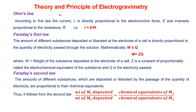Electrogravimetry is governed by three principles: Ohm's law, Faraday's first law, and Faraday's second law of electrolysis. Ohm's law expresses the relationship between three fundamental quantities — current, voltage, electromagnetic force, and resistance. According to this law, the current I is directly proportional to the electromagnetic force E and inversely proportional to the resistance R, giving the formula I = E/R.